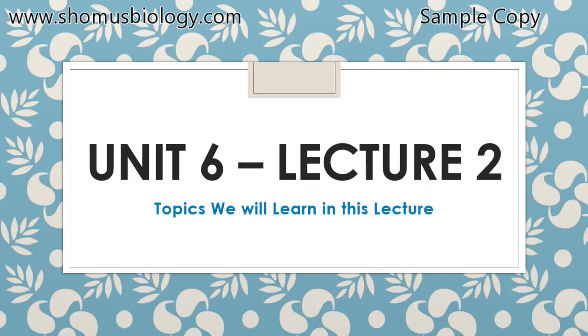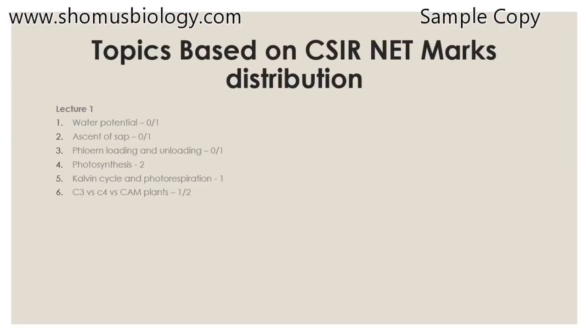This will be lecture 2 of unit 6, the last lecture of unit 6. In this lecture we are going to talk about a few more important topics from plant physiology. Most of the plant physiology topics are already covered in lecture 1, so in this lecture we are mostly going to talk about plant hormones — the basics of plant hormones, what are the types, their nature, and some examples.